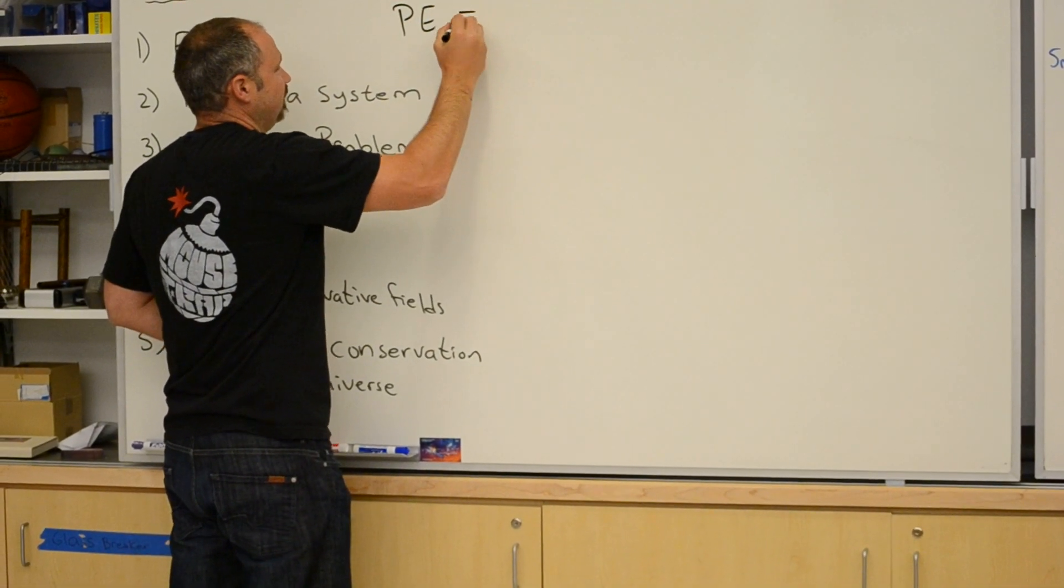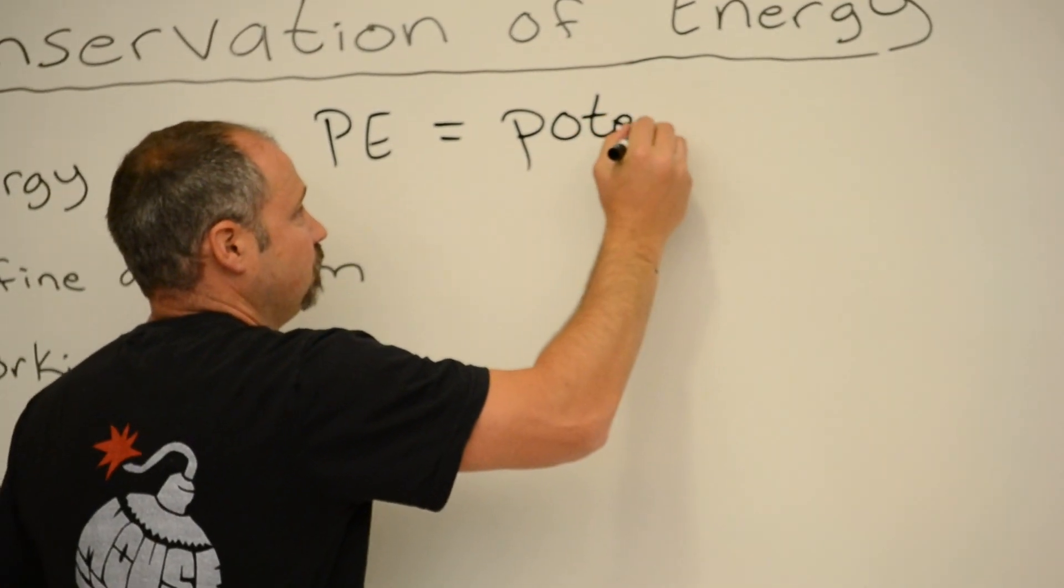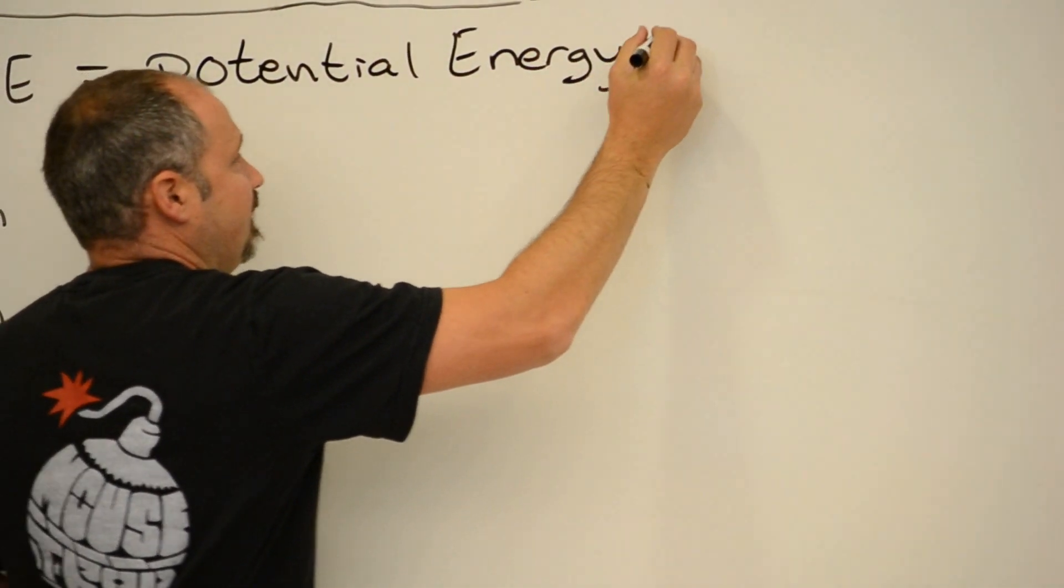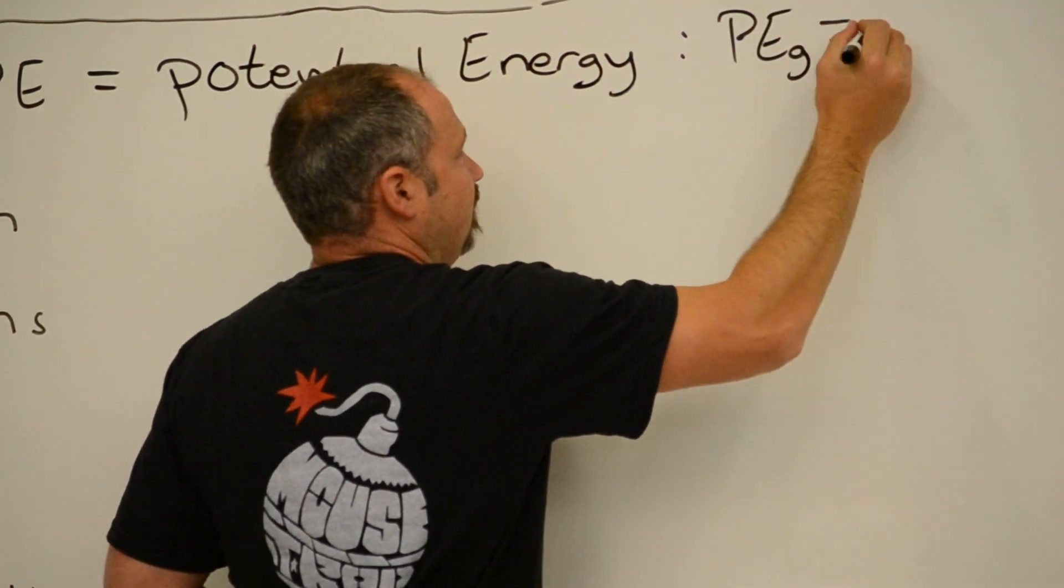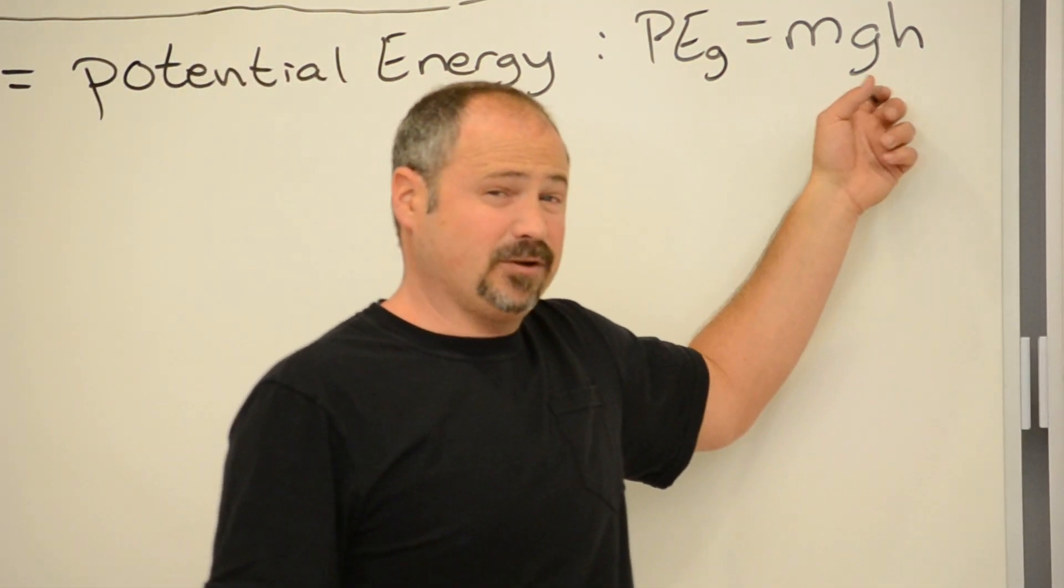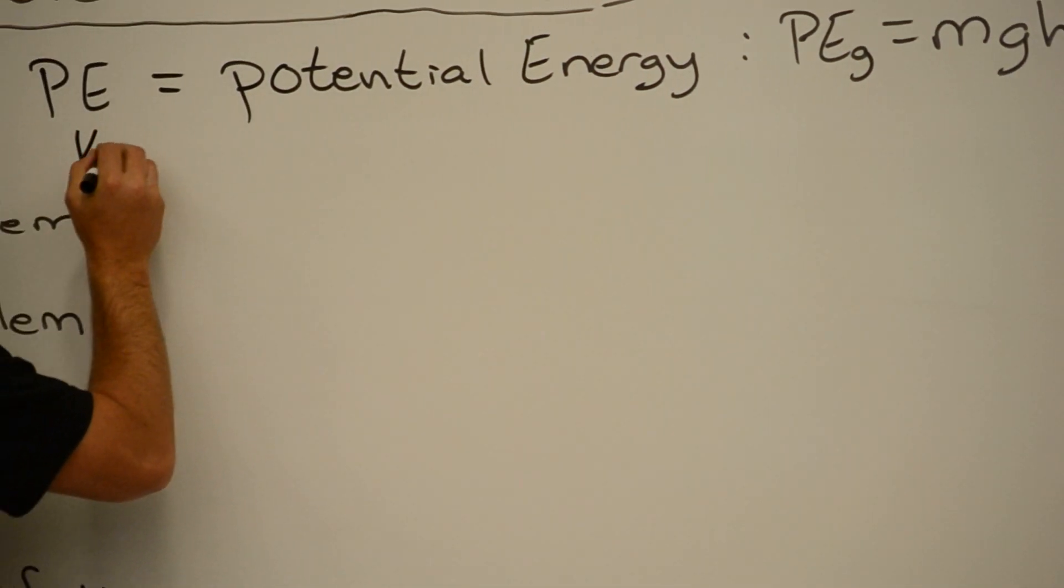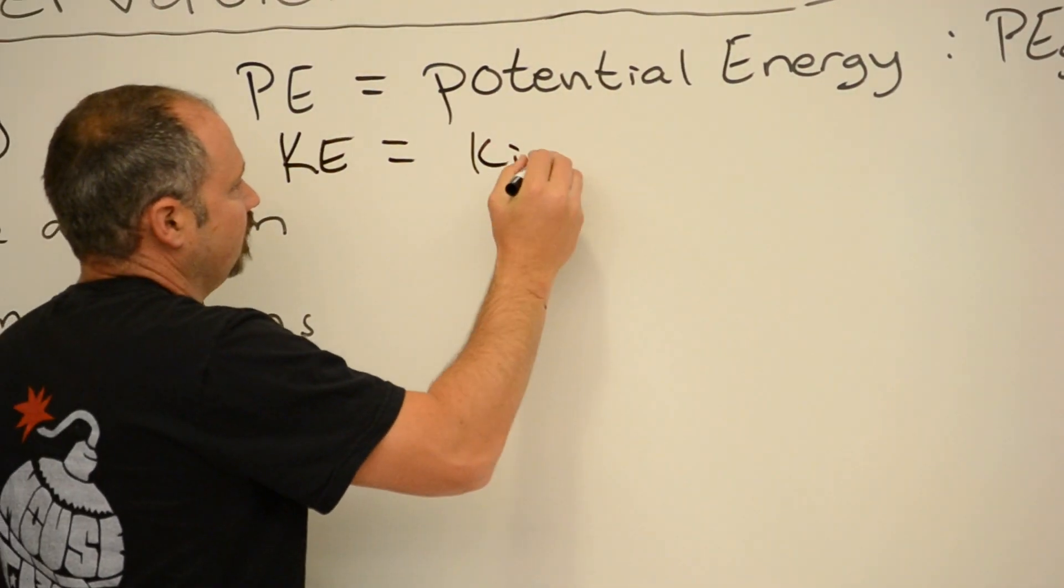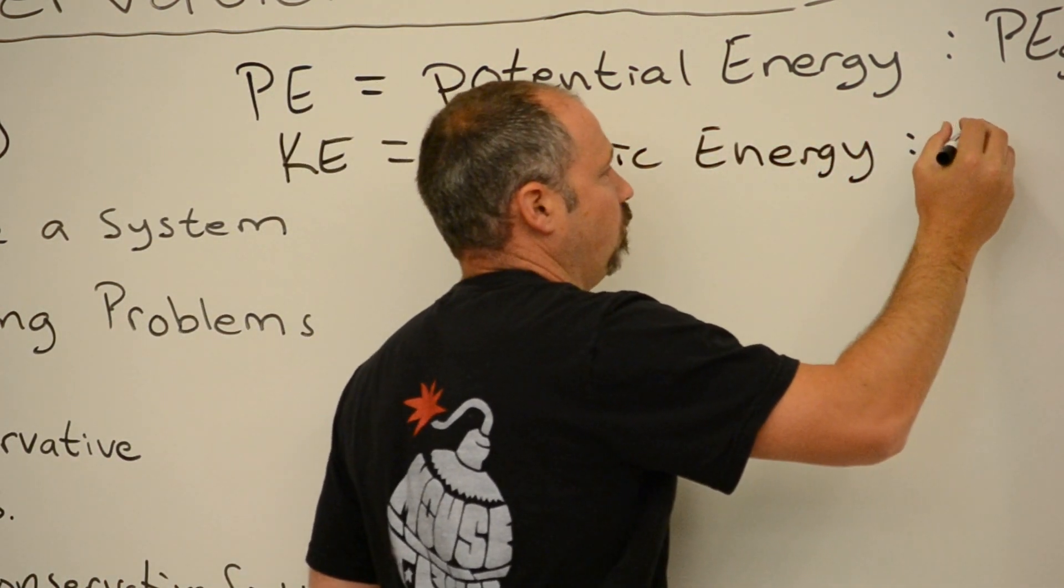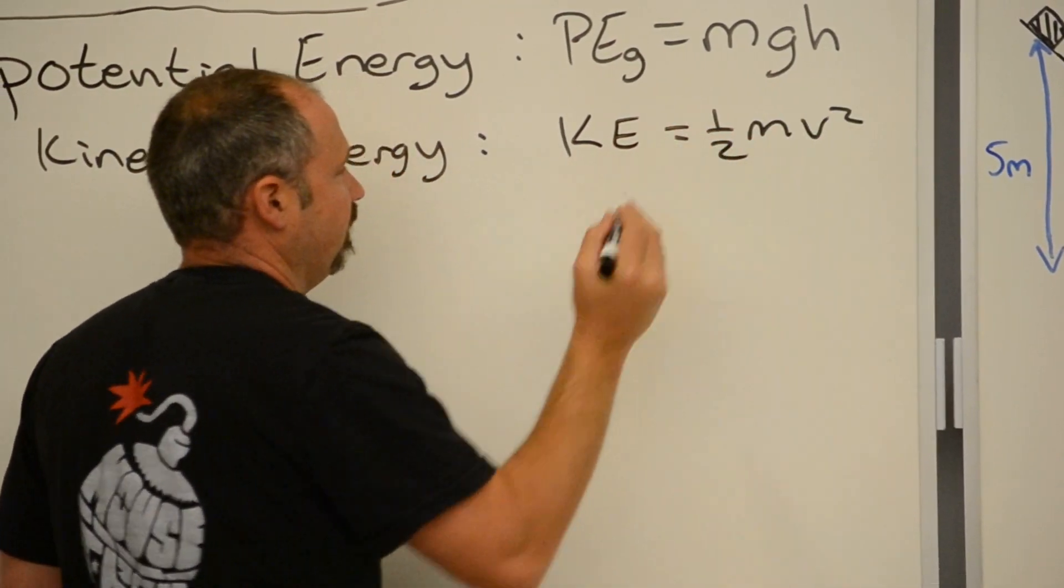Potential energy often gets the symbol PE, sometimes a capital U as well. Potential energy of gravity is equal to mgh - the mass of the object times the acceleration of gravity times the height that it's lifted. Now, the kinetic energy for translational motion always has the formula of one-half mv squared.